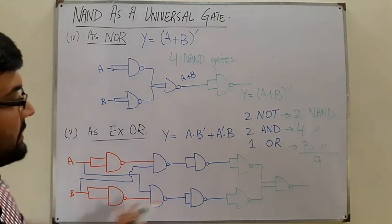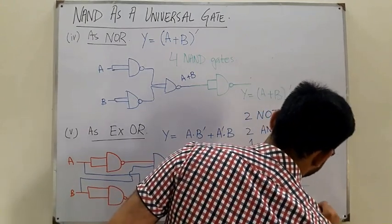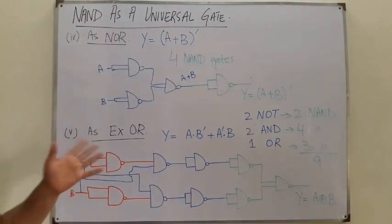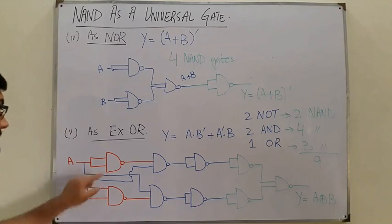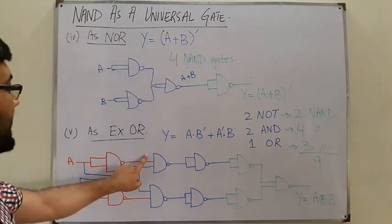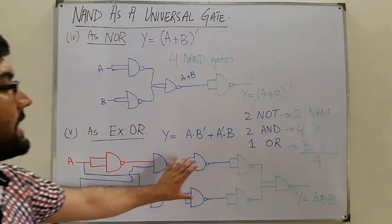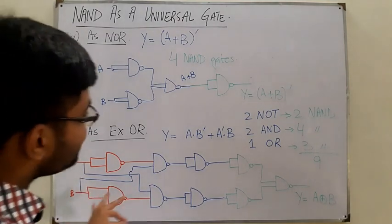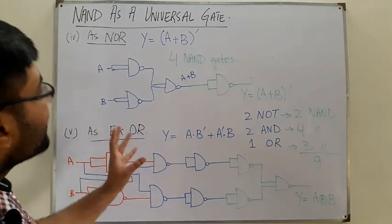This is the complete configuration of the Exclusive-OR gate. The output Y equals A XOR B. You can prove it stepwise yourself — that is your homework problem. A with itself is a NOT gate, giving A complement; B with itself gives B complement. Then A is ANDed with A complement, and B is ANDed with B complement, and these are combined to give A XOR B.